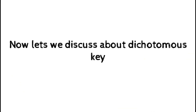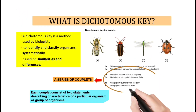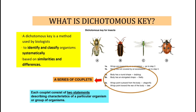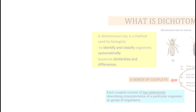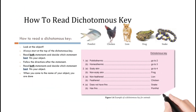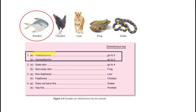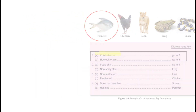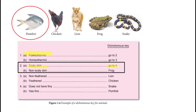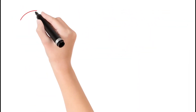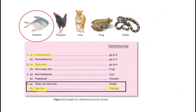Next, we are going to discuss the dichotomous key. A dichotomous key is used by biologists to identify and classify organisms systematically based on their similarities and differences. It consists of a series of couplets, each having two statements describing the characteristics of the organism. To read the dichotomous key, always look at the object and start from the top. Read both statements and decide which one best fits the object, then follow the instruction — for example, go to number two, then number four, until you arrive at the name of your object.